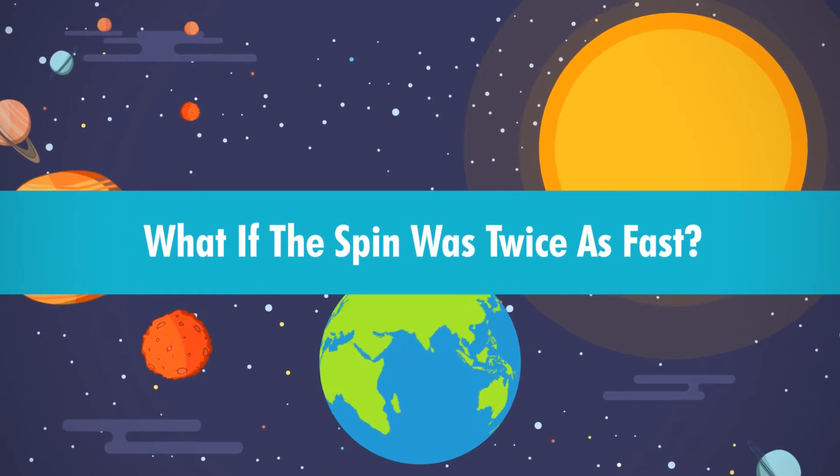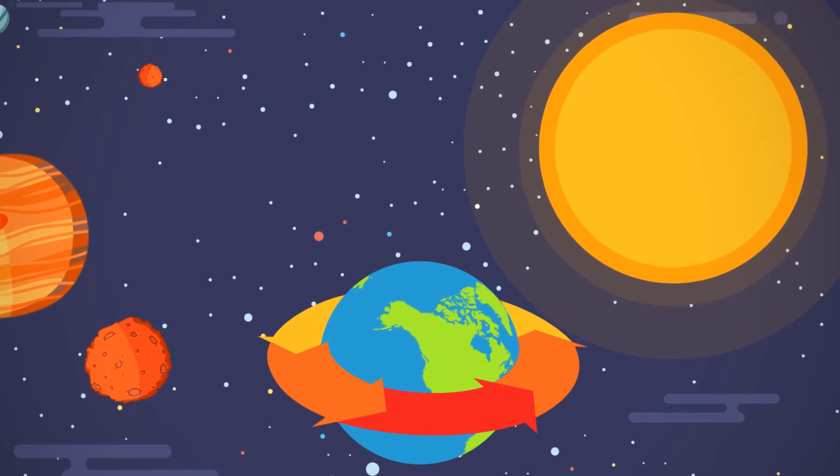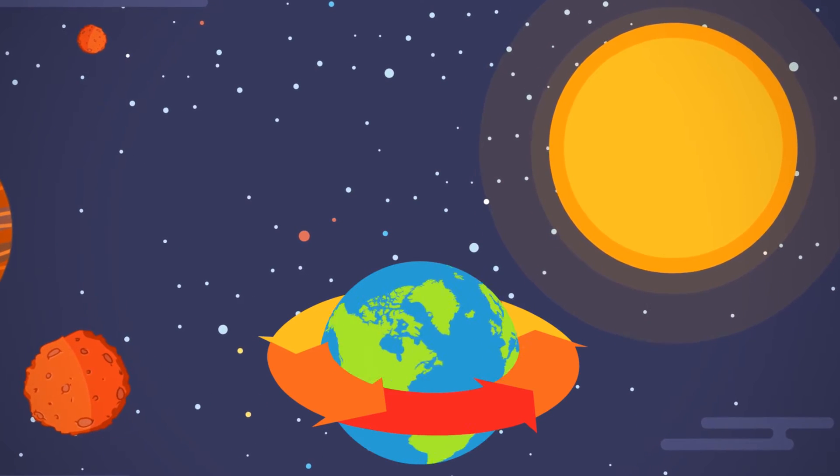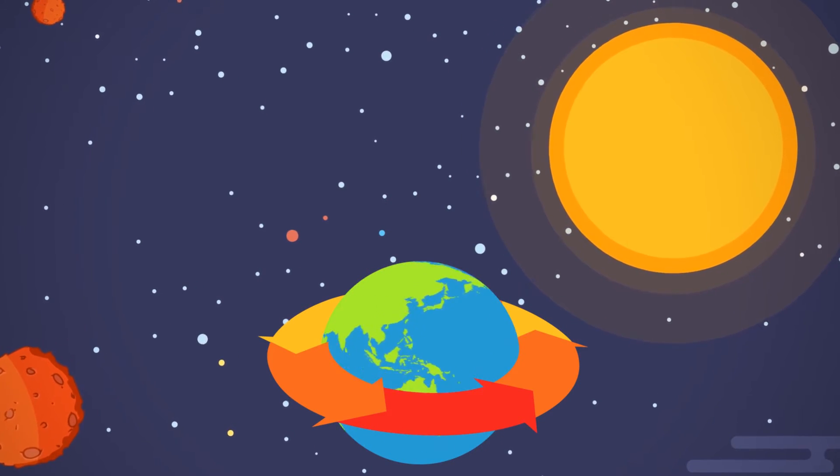So what if Earth's spin was twice as fast? With so much being reliant on the Earth's spin, things would change dramatically if it became twice as fast, whether it occurred instantly or gradually. A gradual increase in speed would at least give us a chance to get used to the changing conditions around us.